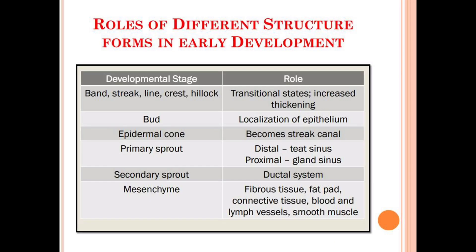Here are the different structures formed at different development stages and their roles. The band, streak, line, crest, and hillock are transitional states — just the thickening of the ectoderm along the midline. The next stage is formed because of the localization of epithelial tissues, which leads to the formation of the bud. The formation of the epidermal cone will then lead to the formation of the streak canal, which is the entrance of the udder.